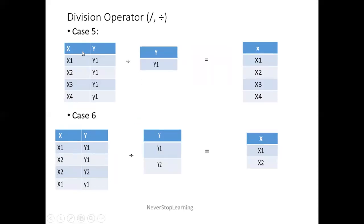Case 5: table A has columns X and Y, table B has column Y with only one tuple Y1. Y1 is present in table A's Y column, so it's a proper subset. The resultant will have column X. Now all tuples — X1, X2, X3, and X4 — are each associated with Y1, so all values come in the resultant table because all are associated with the single tuple of table B.